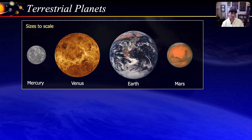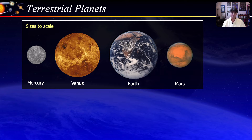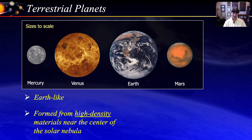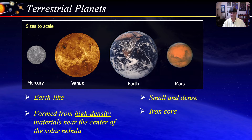Planets are divided into two groups: the terrestrial planets and the Jovian planets. I will not go into details of each of the planets in this lecture, since they are the subject of an upcoming lecture, so I'll just cover some general characteristics of each grouping. The terrestrial planets are called terrestrial because they are Earth-like in many characteristics. They are formed from the high-density material near the center of the solar nebula, or those closest to the Sun. They are relatively small and very dense, they all have an iron core, and they are sometimes referred to as the inner planets.